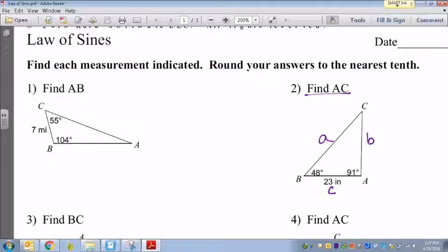In this case I need to actually find angle C because I have 91 and 48, and all angles inside of a triangle add up to be 180. So 91 plus 48 is 139, and 180 minus 139 would give me 41 degrees.